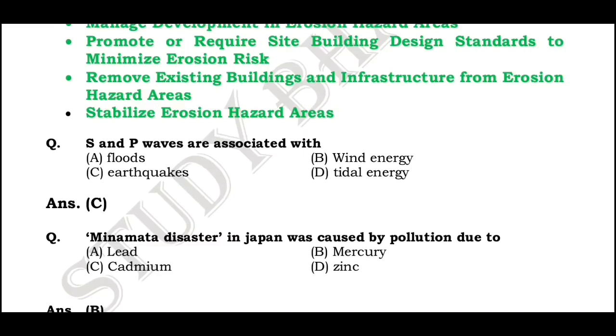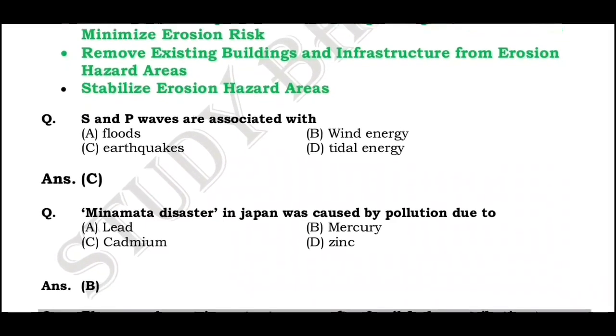The Minamata disaster in Japan was caused by pollution due to mercury.